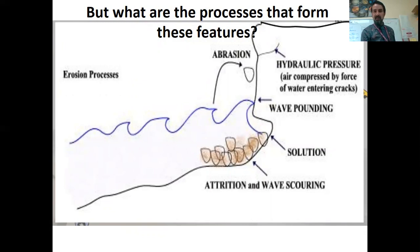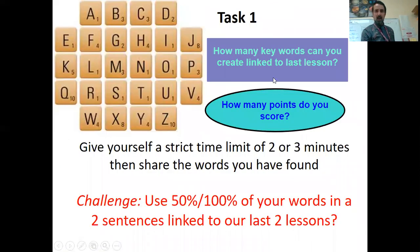So your lesson, task one, is a scrabble task. How many words, keyword links to our last couple of lessons, can you create from here? You know how scrabble works. It's all about each letter having a certain value attached to it. So if your name was Ben and you made the word Ben, that would be three for the B, one for the E, one for the N, so a cost of five points. For the highest score of points, give yourself